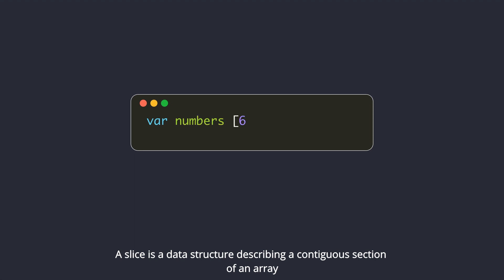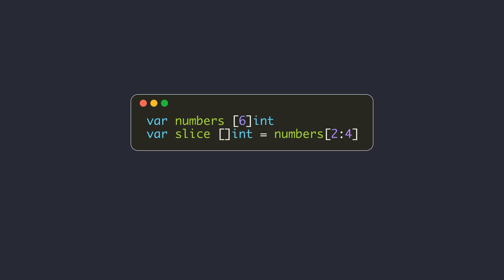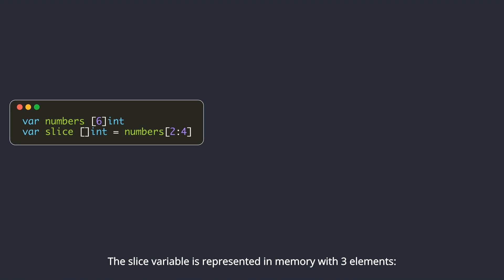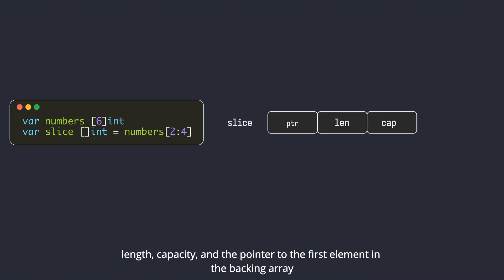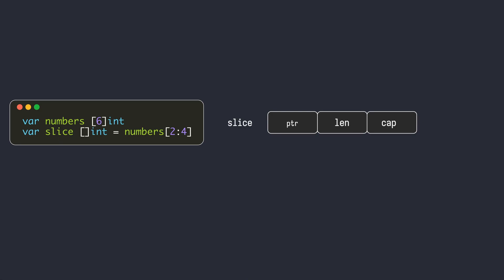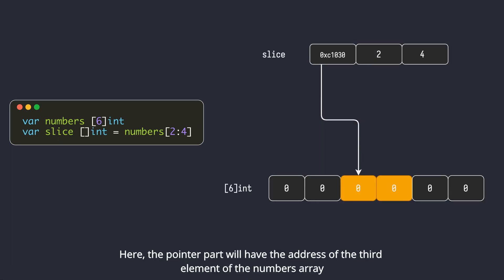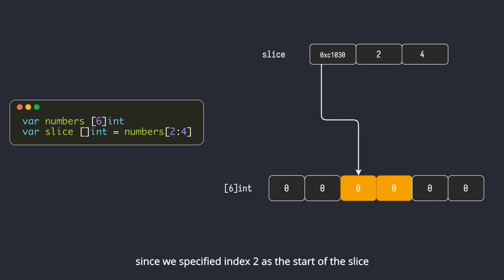A slice is a data structure describing a contiguous section of an array. A slice is not an array — it describes a piece of an array. The slice variable is represented in memory with three elements: length, capacity, and a pointer to the first element in the backing array. The pointer part will have the address of the third element of the numbers array since we specified index 2 as the start of the slice.